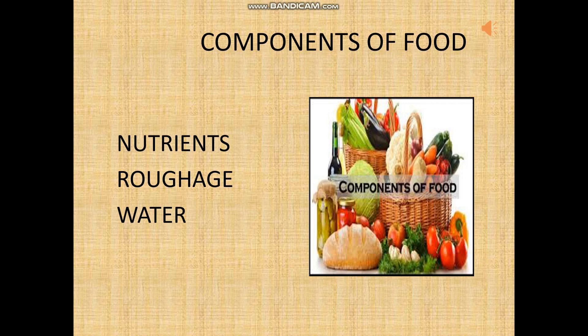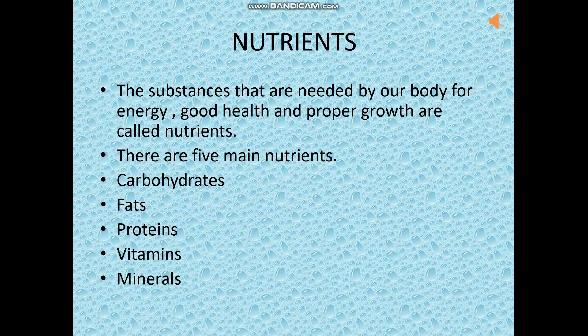Components of food. In components of food we have nutrients, roughage and water. Nutrients are the substances that are needed by our body for energy, good health and proper growth. Now in these nutrients we have 5 main nutrients, which are carbohydrates, fats, proteins, vitamins and minerals.